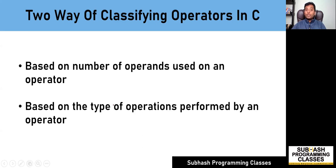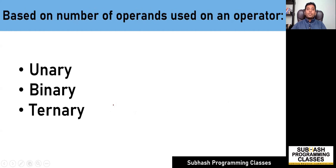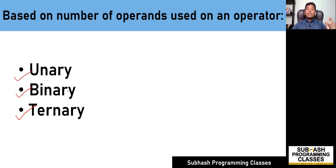So let us discuss each of these one by one. The first way of classification is based on the number of operands that you make use on an operator — you can classify your operators into unary operators, binary operators, and ternary operators.